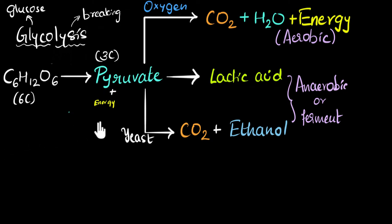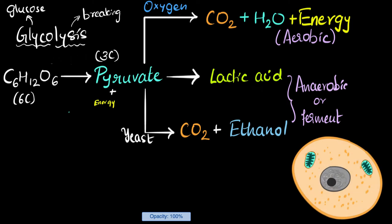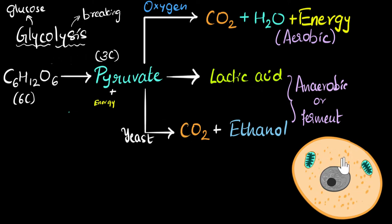Now we can answer our original question — where do these reactions take place? The reactions that do not require oxygen happen in the cytoplasm of the cell. The cytoplasm is the stuff outside of the nucleus but within the cell. Glycolysis happens in the cytoplasm, and fermentation also happens in the cytoplasm.